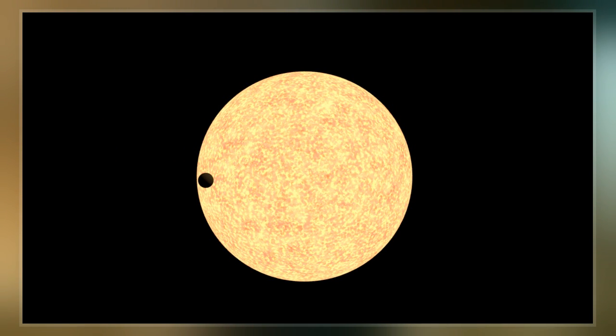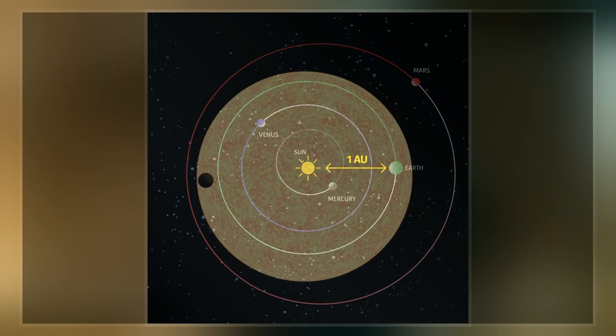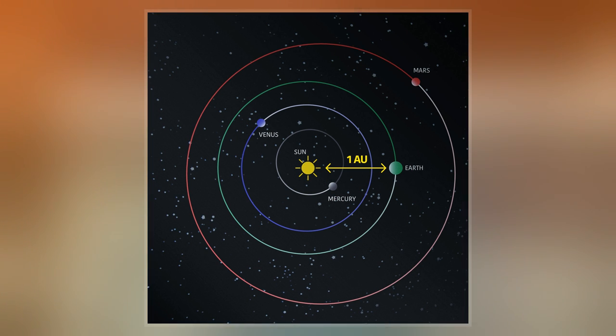In the non-normative annex C to ISO 800003-2006, the symbol of the astronomical unit is AUA.